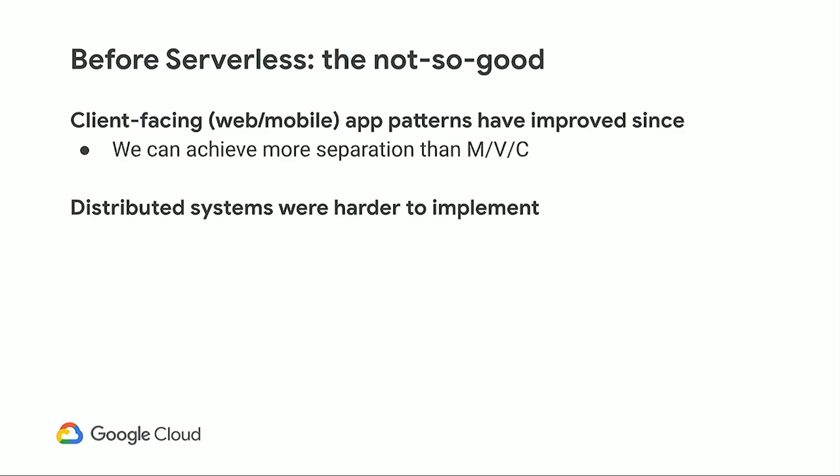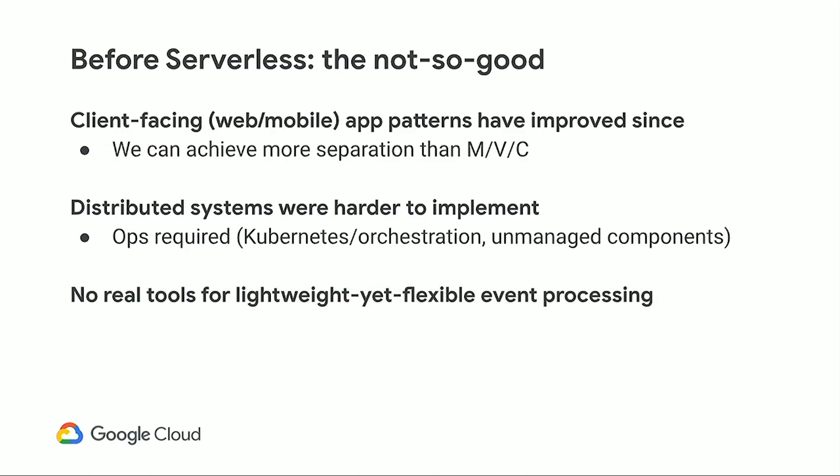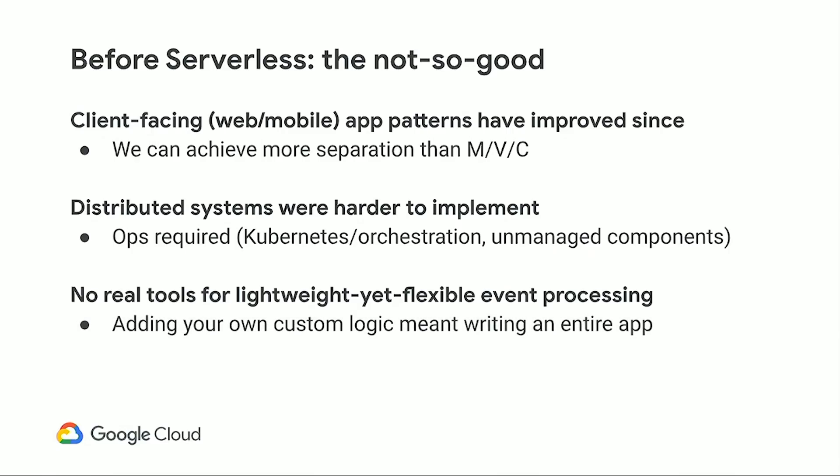Distributed systems back then were notably harder to implement — you had to worry about ops or orchestration, probably Kubernetes, and unmanaged components within your distributed system. Also, back then there were no real tools for doing lightweight yet flexible event processing. The best you could do was something like if-this-then-that, which is good as long as its WYSIWYG approach covers what you need, but the second it doesn't, you can't just write raw code on top of it. Adding your own custom logic meant writing your entire application from scratch.